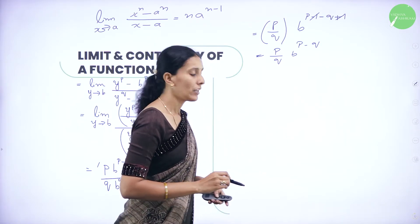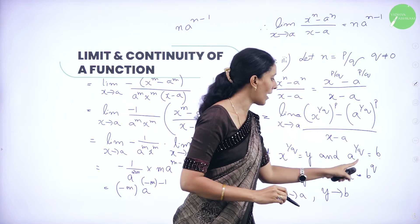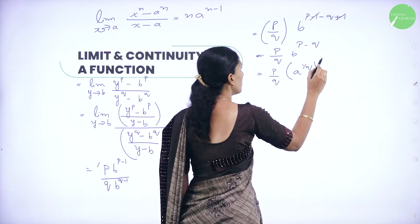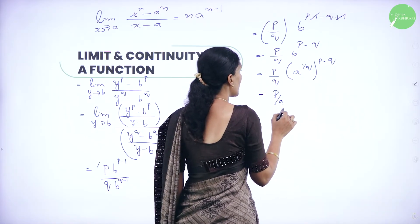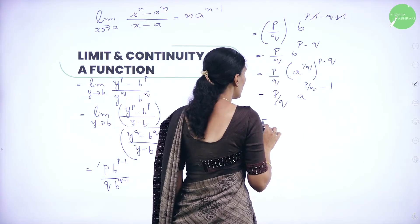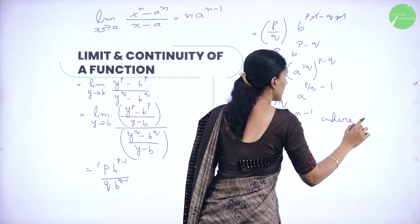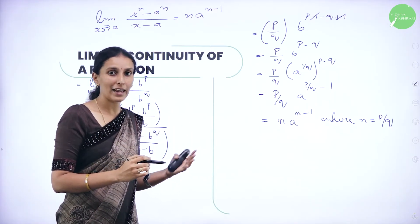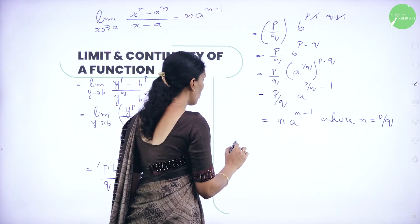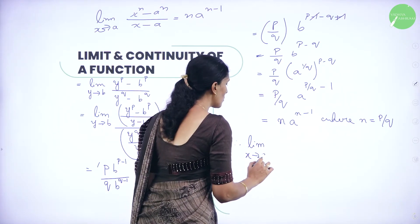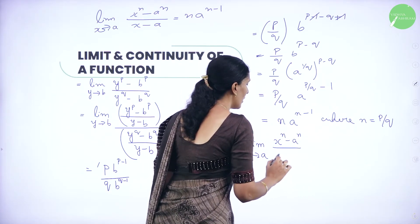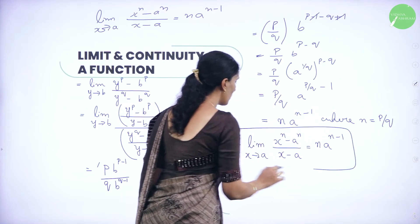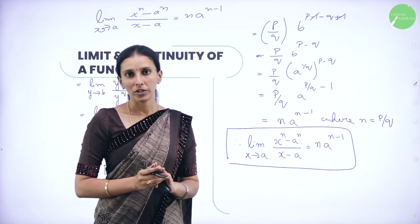This gives p by q times b to the power p minus 1 minus (q minus 1), which simplifies to p by q times b to the power p minus q. Now b is a to the power 1 by q, so replacing gives p by q times a to the power 1 by q into p minus q, which equals p by q times a to the power p by q minus 1 — the same as n into a power n minus 1 where n equals p by q. So whether n is positive, negative, or any fraction, the result holds. Therefore: limit x tends to a of x power n minus a power n divided by x minus a always equals n into a power n minus 1. This is the result proved for all three cases — a very important question for your examination.